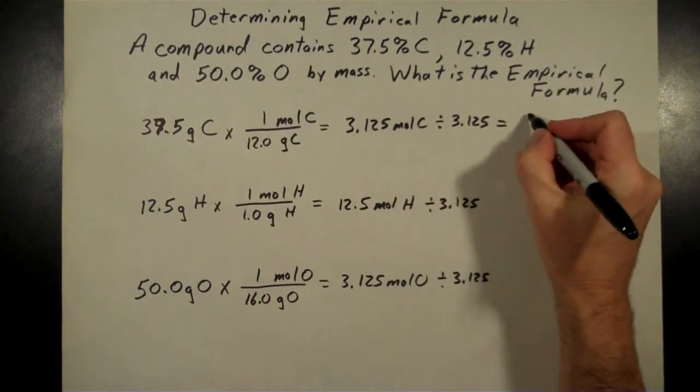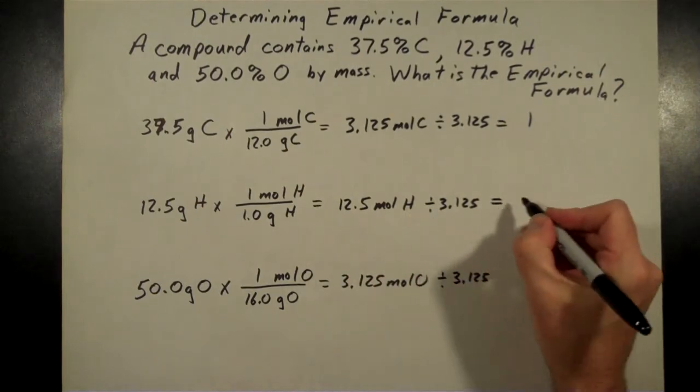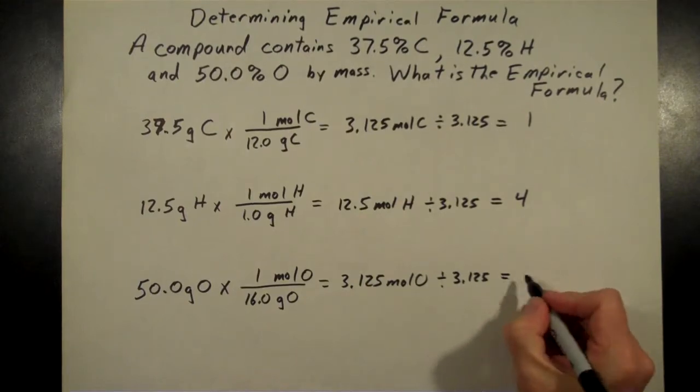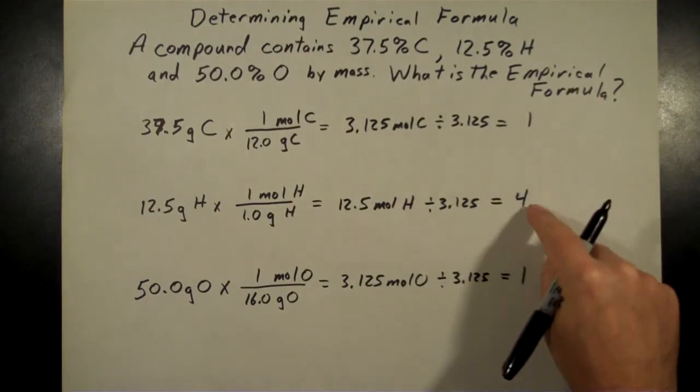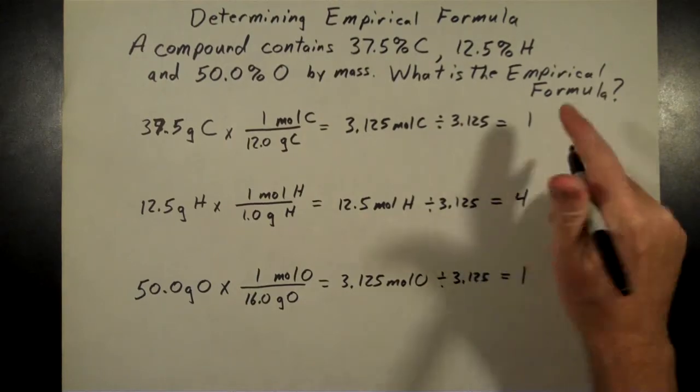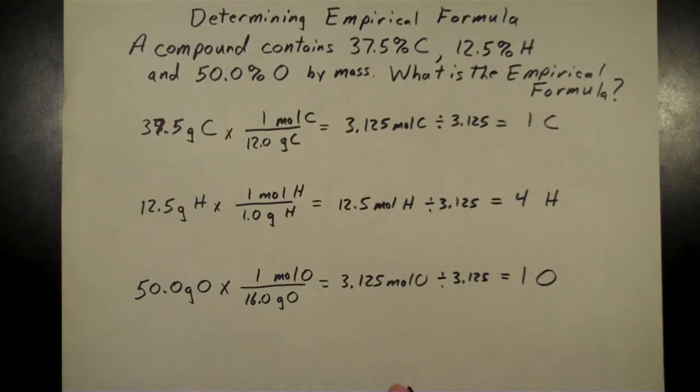So 3.125 divided by itself is just a 1 there. 12.5 divided by 3.125 comes out exactly to 4. And dividing by itself just gives us a 1. There's our whole numbers. That's what we're looking for is this whole number ratio. It's 1 carbon to 4 hydrogens to 1 oxygen for this.